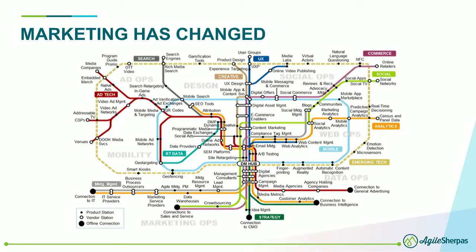What we're looking at here is the visualization of marketing as if it were a subway map. The reason that we need agility is because of this increased complexity in the world of marketing. The number of channels and the ways that we communicate and interface with our audience has exploded in complexity in the recent past.